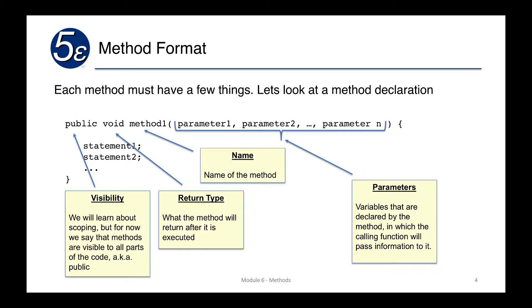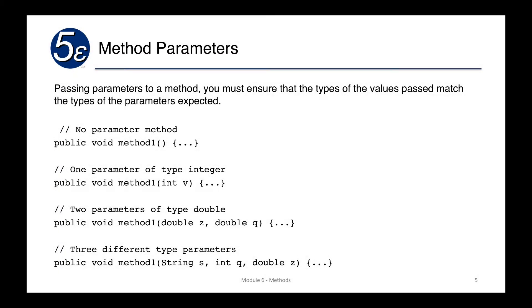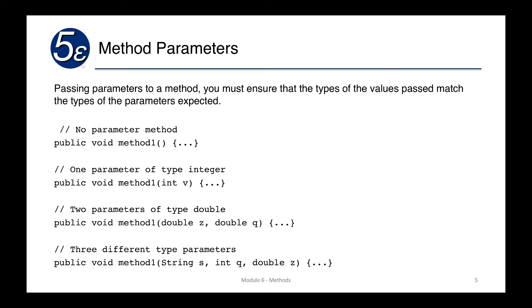This is very similar to the main method that you have already been using. The main method is the starting point for all programs and it is nothing more than a method itself. In terms of parameters, we pass parameters into the method. We have to ensure that the types match the types of the parameters expected.